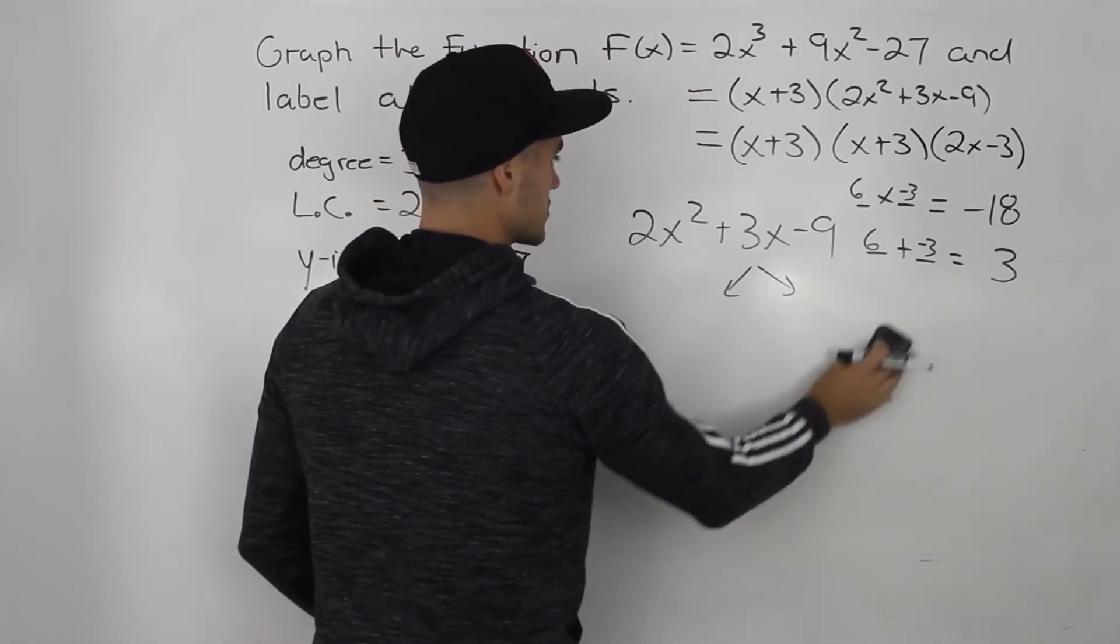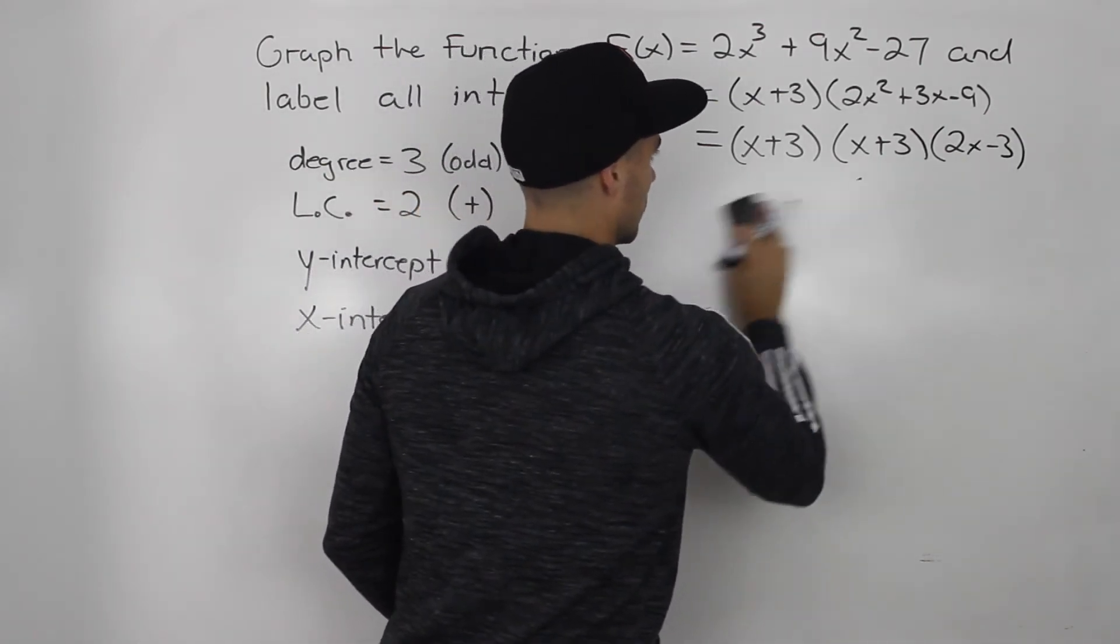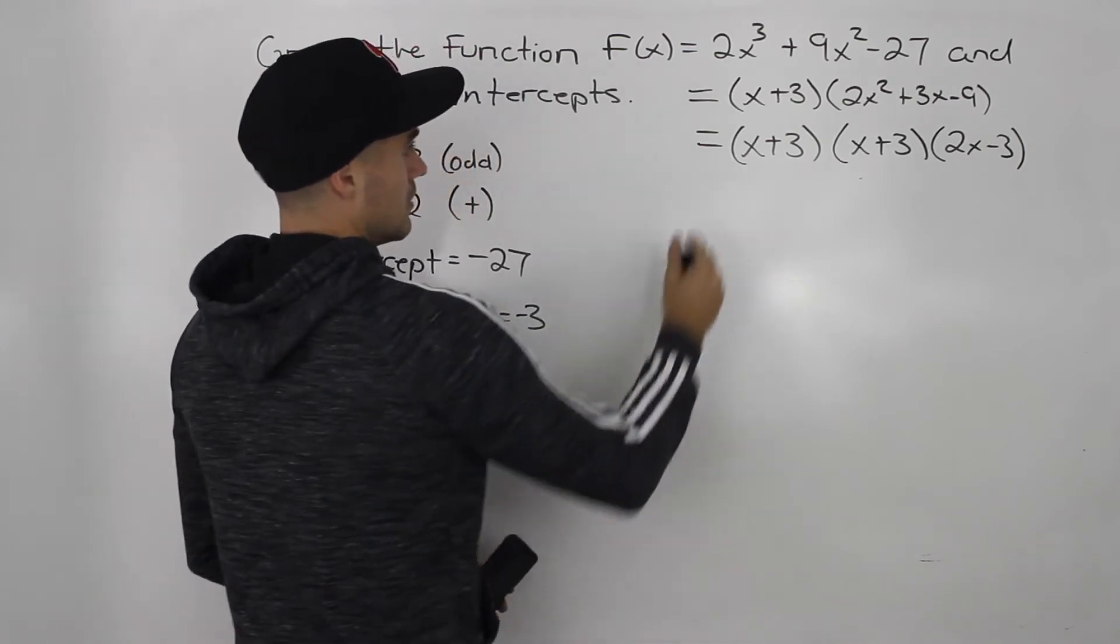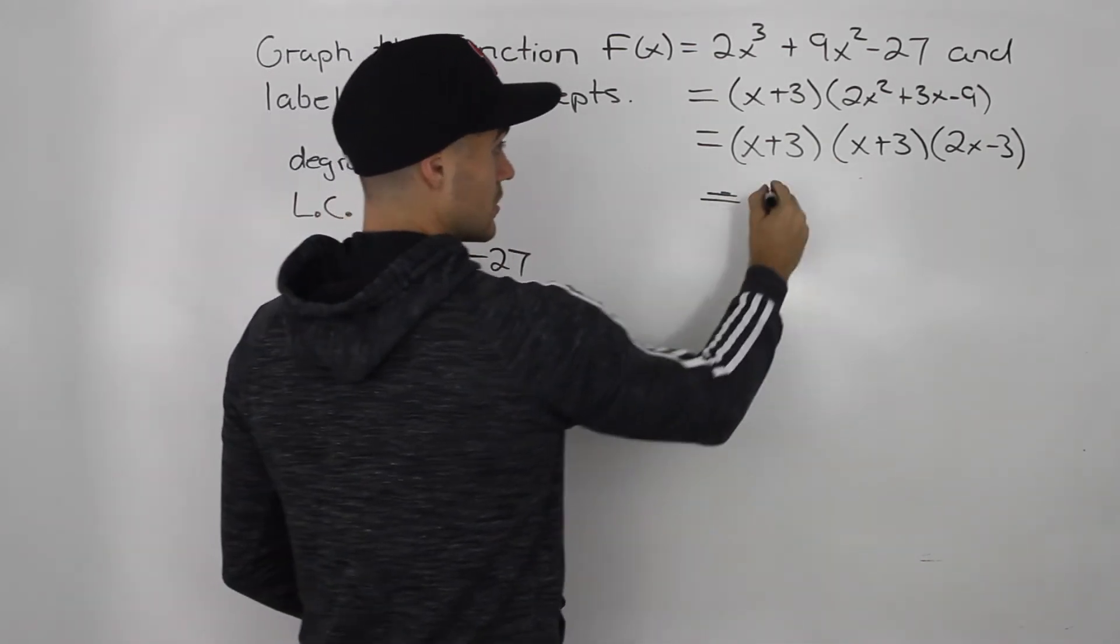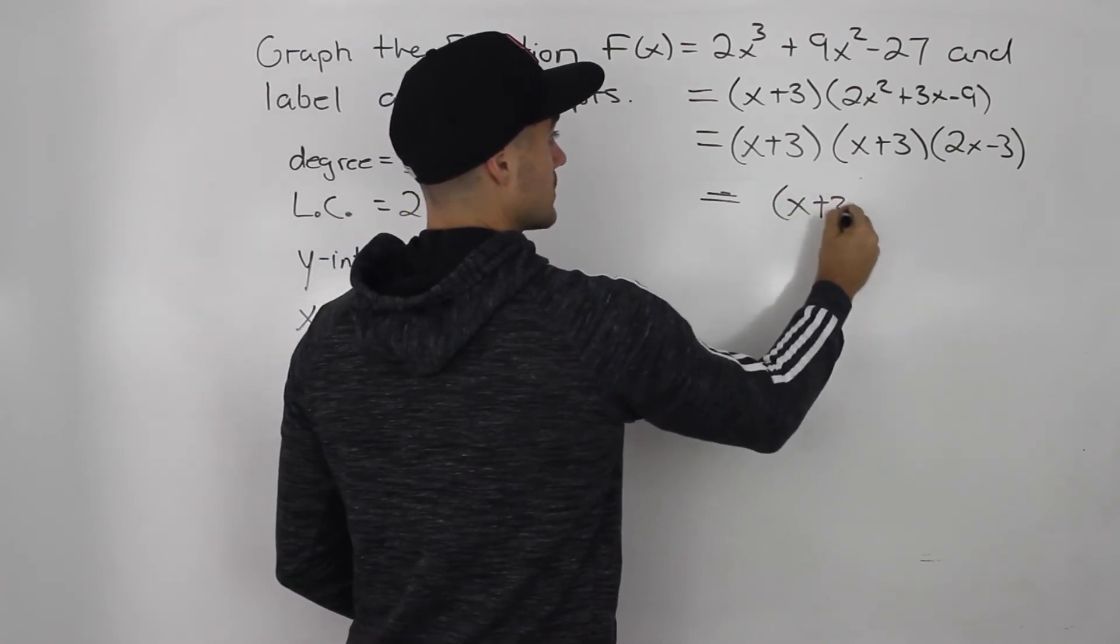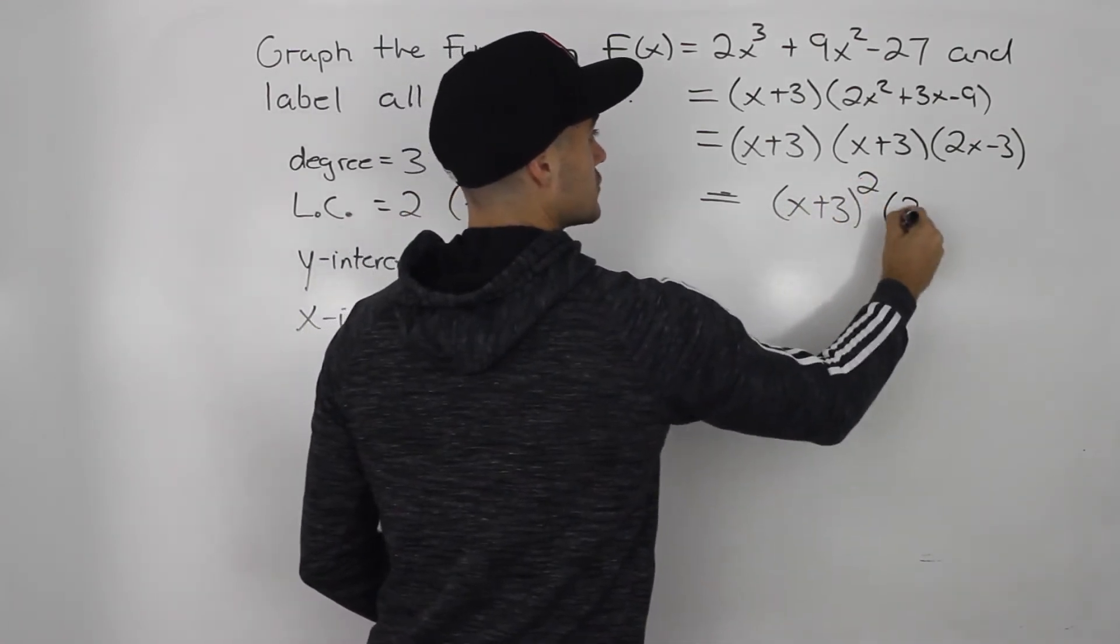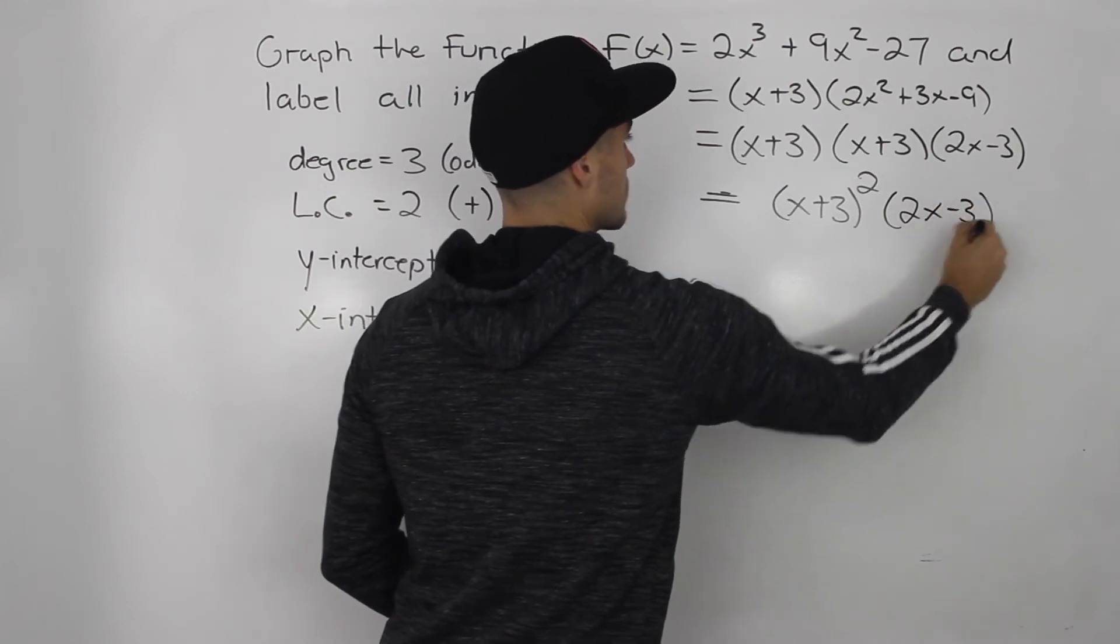So to make this look nicer, notice how these are the same factors. So we can multiply those, we can just write them out squared, 2x - 3.